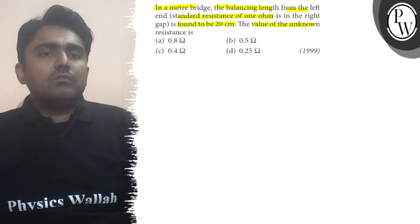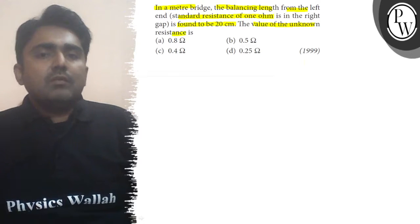The value of the unknown resistance is to be found. The standard resistance is 1 ohm. This is from 1999, and there are four options given here.